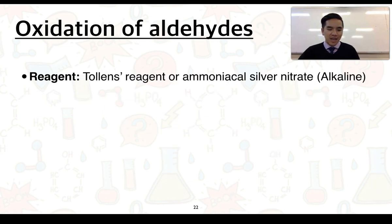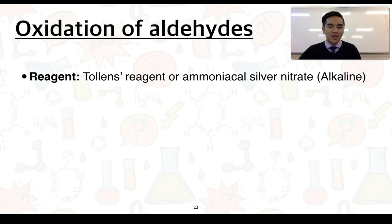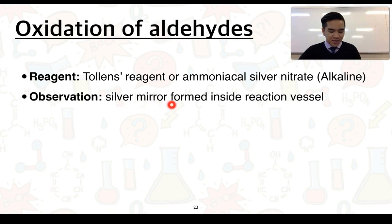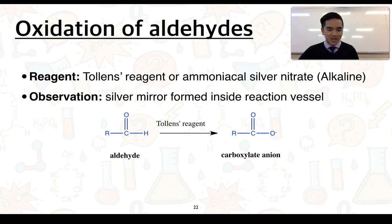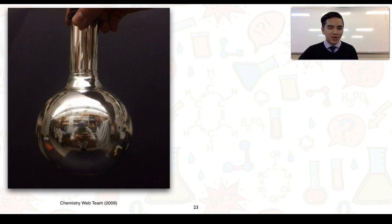The second method uses Tollens' reagent — ammoniacal silver nitrate — which produces an alkaline environment. When an aldehyde reacts with Tollens' reagent, the observation is that a silver mirror forms on the inside of the reaction vessel. The aldehyde is oxidized to a carboxylate anion under alkaline conditions, while the silver ions in Tollens' reagent are reduced to metallic silver, coating the vessel. Ketones do not react. This silver mirror test will be demonstrated in class.